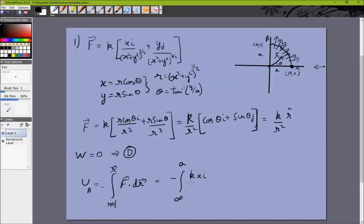K [X i cap + Y j cap]/(x² + y²)^(3/2) dot dr. But dot dr in this case will simply be dx i cap because there is no displacement in the y direction, and when you take the dot product the j term will cancel out. You'll just have x dx by (x² + y²)^(3/2).